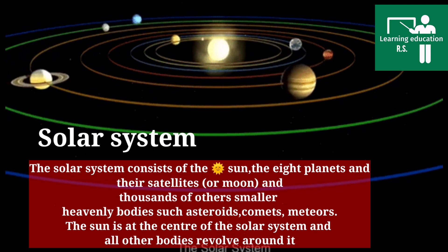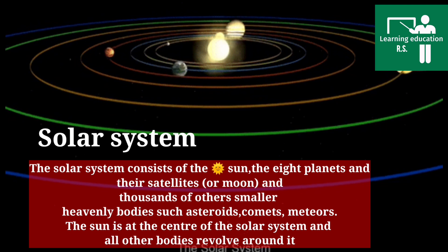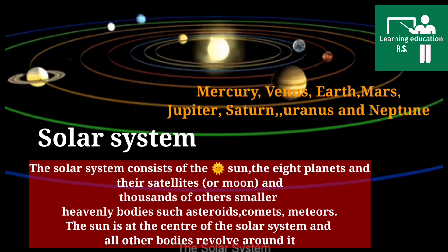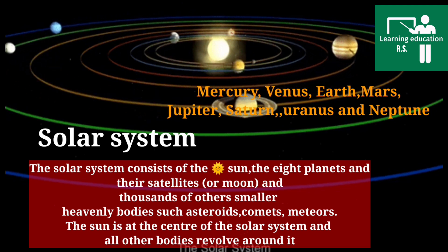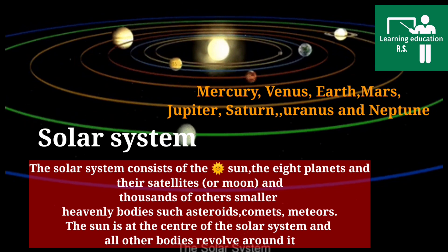The sun is the nearest star to Earth. The eight planets according to their distance from the sun are Mercury, Venus, Earth, Mars, Jupiter, Saturn, Uranus, and Neptune. The ninth planet Pluto has been removed from the family of the solar system.